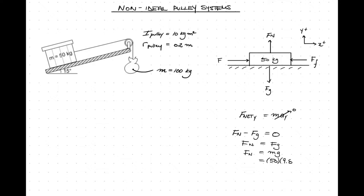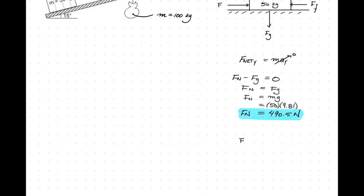So start by summing the forces in the y to solve for your normal force. In this case, it's simply mg because we have no acceleration and no other components of any other forces in the y direction. Fn equals 490.5 newtons.